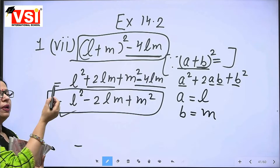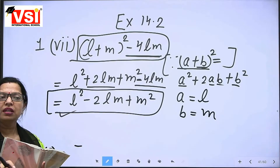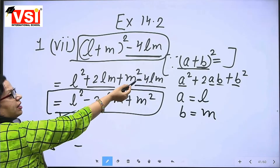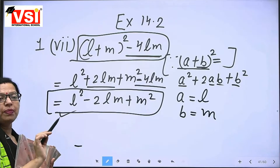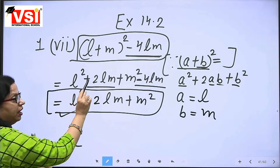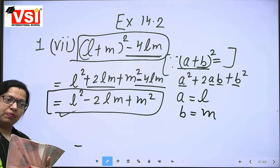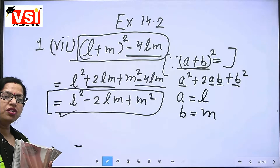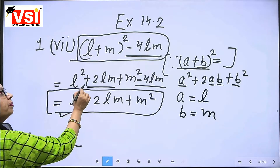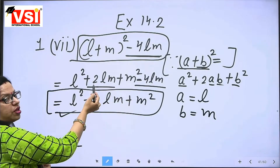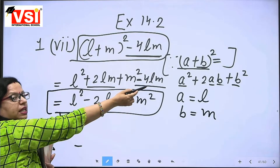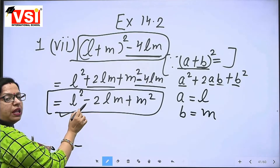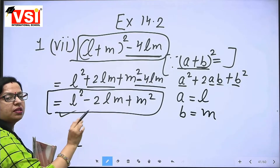Now, L square and M square have no other terms where addition or subtraction is possible. The terms we have are 2LM minus 4LM. LM is the same variable with the same power in both, so we can do subtraction between them. Minus 4LM is the greater one, so we write minus 2LM. That is how this step is obtained.